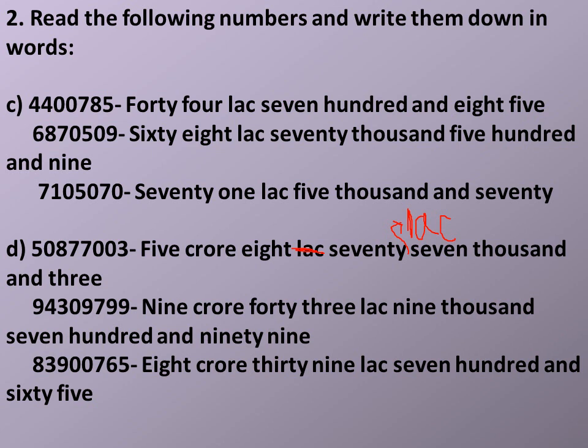Number d: 50,877,003. That is 5 crore 87 lakh 7,003. Here I made a mistake — it will be 5 crore 87 lakh 7003. Let me correct it.